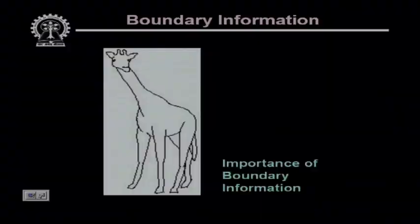Let us see another application of image processing for machine vision. An image showing only the boundary contours of an animal is presented — no other information is available except the boundary. Yet, all of you can identify this as a giraffe. This illustrates that boundaries contain most of the information about objects in a scene, and using boundary information, we can develop various image processing applications.